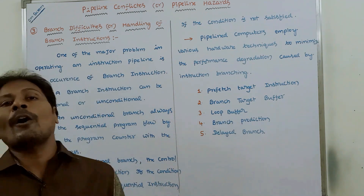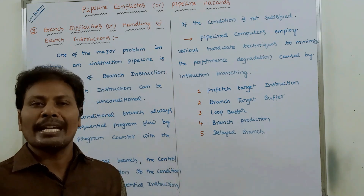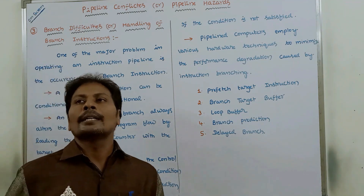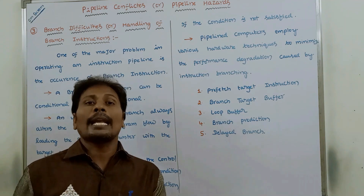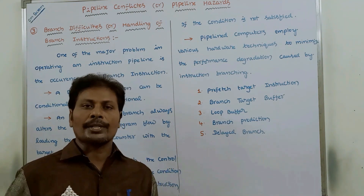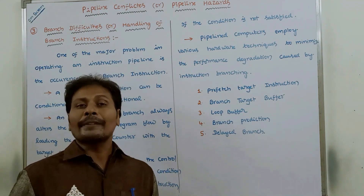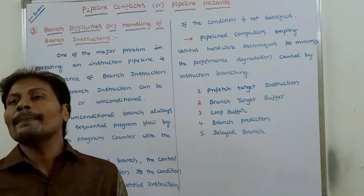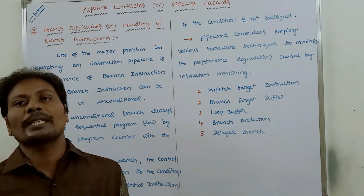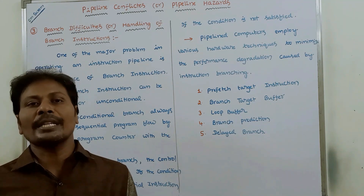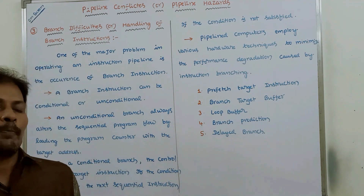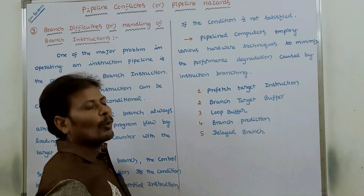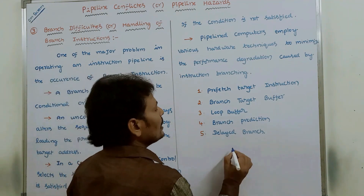An unconditional branch alters the sequential program flow by loading the target address into the program counter. In the case of a conditional branch instruction, if the condition is satisfied, the program control selects the target instruction; if the condition is not satisfied, the program control continues with the next instruction in the sequence.